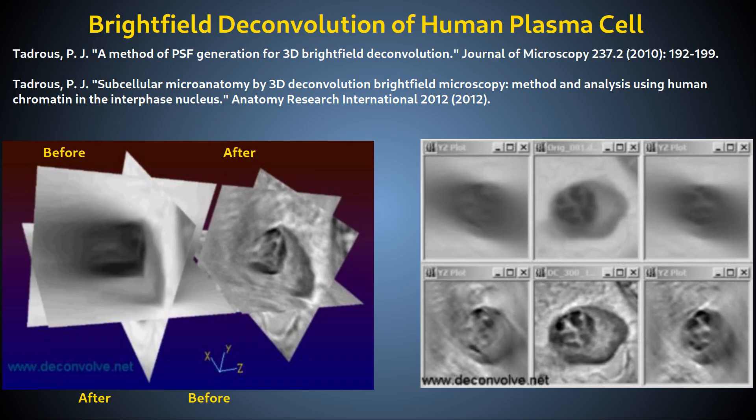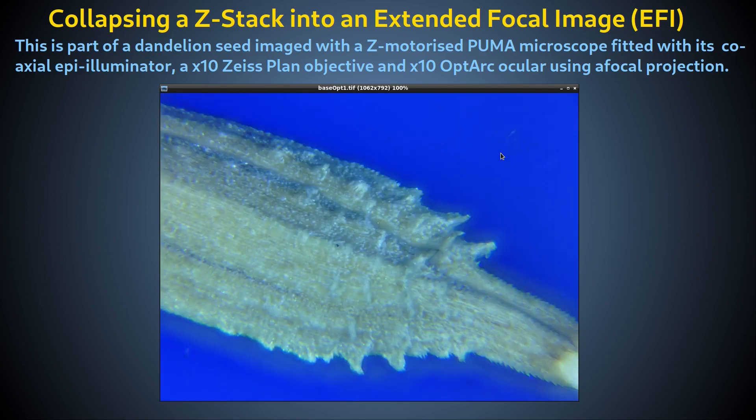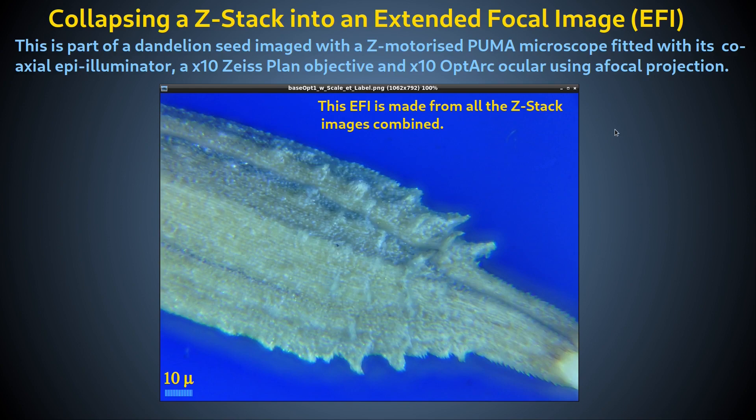Z-stacks through semi-transparent samples are blurry in the Z-dimension, but they can be processed using deconvolution to de-blur them to give clear 3D images, examples of which are shown here. Z-stacks can also be collapsed into a single flat image of extended focal depth, as shown here. This is particularly useful for imaging opaque specimens where only the surface can be seen.